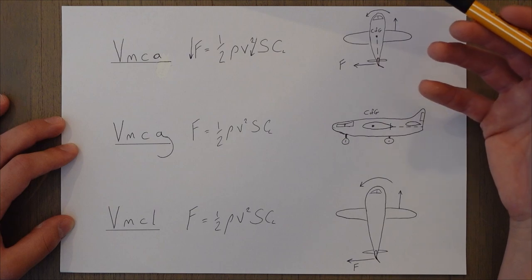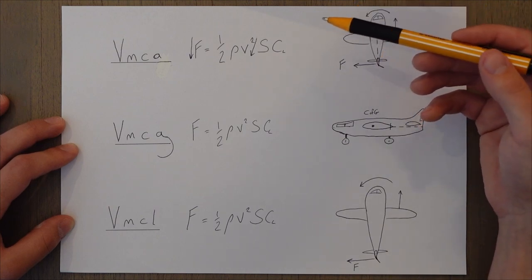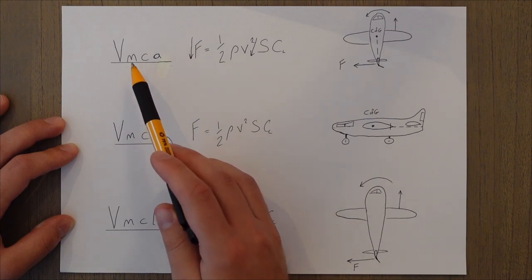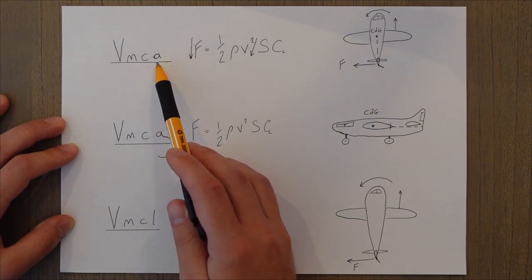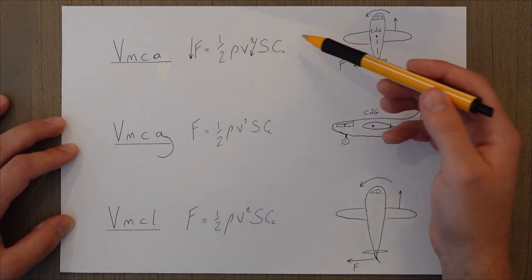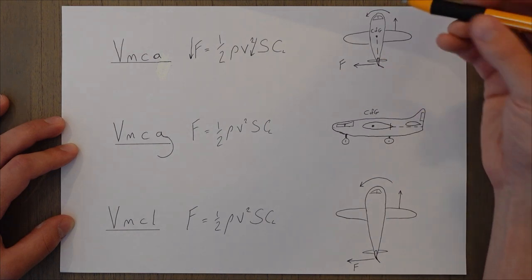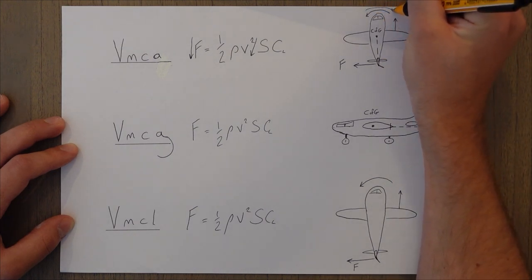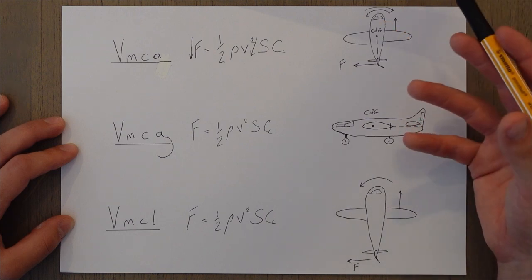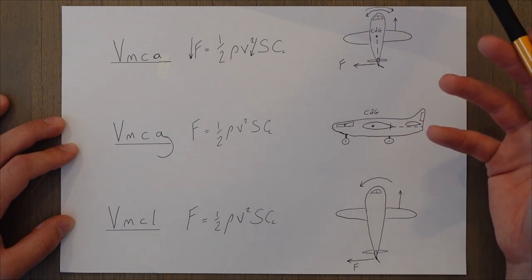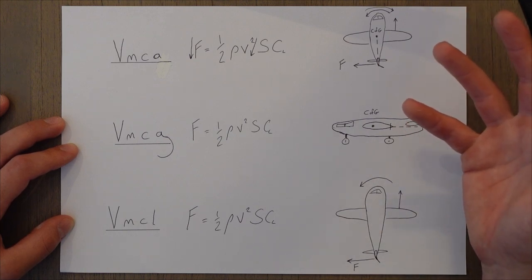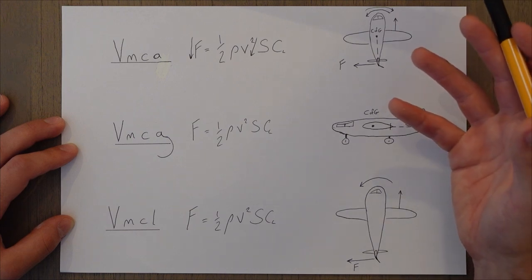So we have a limit on how slow we can fly during takeoff. This is called VMCA. Speed for minimum control whilst airborne. This is the minimum speed where we're still able to generate enough force in the tail to generate that counteracting moment. It's specific to that day's conditions because factors such as altitude density and temperature can all have an effect on our maximum thrust output.